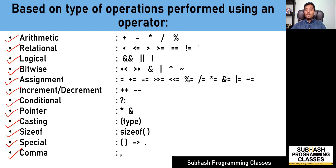Relational operators are those operators which will either result in a true or false value after evaluating an expression. Relational operators include less than, less than or equal to, greater than, greater than or equal to, equal to, and not equal to. Logical operators will again result in a true or false value, and there are three logical operators: logical AND-AND operator, logical OR-OR operator, and logical NOT operator. I prefer calling it AND-AND and OR-OR because in bitwise operators there is a single AND, and just to avoid confusion between the two.